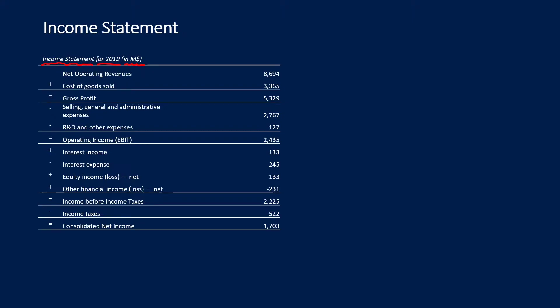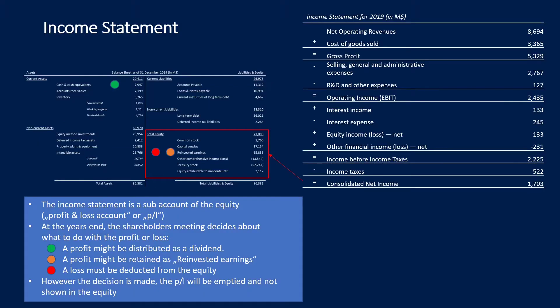What we need to know about the income statement before we read it in depth is how it is combined with the balance sheet. The income statement is a sub-account of the equity. In accounting terms, the income statement is called the profit and loss account, or simply P&L. So normally we would see the income statement somewhere here in the equity.